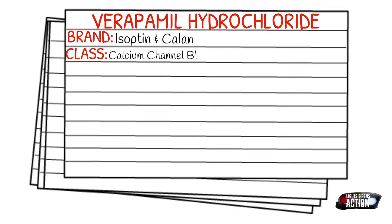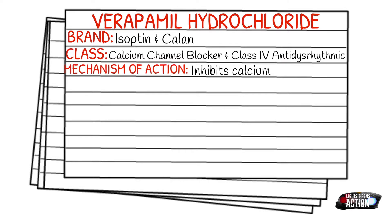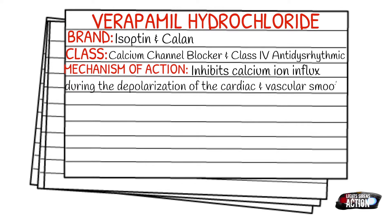Today's medication is called verapamil hydrochloride. It falls under the class of calcium channel blockers and class 4 antidysrhythmics. The mechanism of action is that it inhibits the calcium ion influx during the depolarization of the cardiac and vascular smooth muscle. The conduction rate at the AV node is slowed and coronary vasodilation occurs.